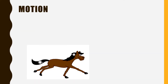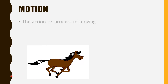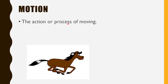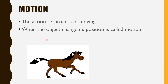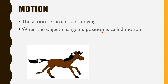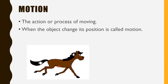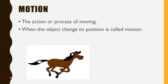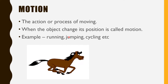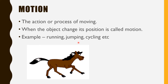What is motion? Have you ever thought about this? The action or process of moving is called motion. Or when an object changes its position, it is also called motion. As the horse is moving, it is changing its position. Examples include running, jumping, cycling, etc. These all are motion.